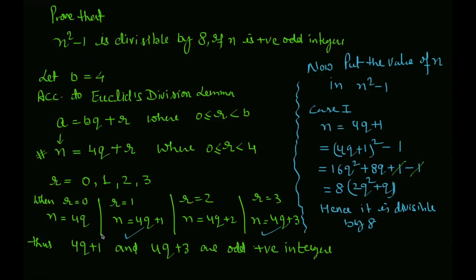So 4q plus 1 and 4q plus 3 are positive odd integers. Jo bhi n ki value hai, hamare paas 4q plus 1 and 4q plus 3 hai. Is ko n square minus 1 mein put kar denge.